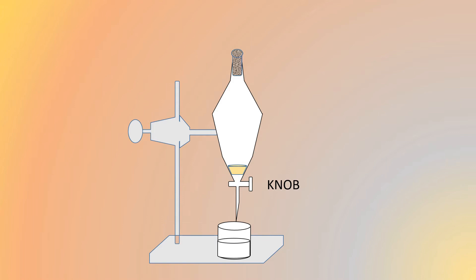In the decantation process, we use a separating funnel to separate immiscible liquids that do not mix together. When allowed to settle, they form layers based on their density. This is the principle by which we are able to separate this type of mixture.